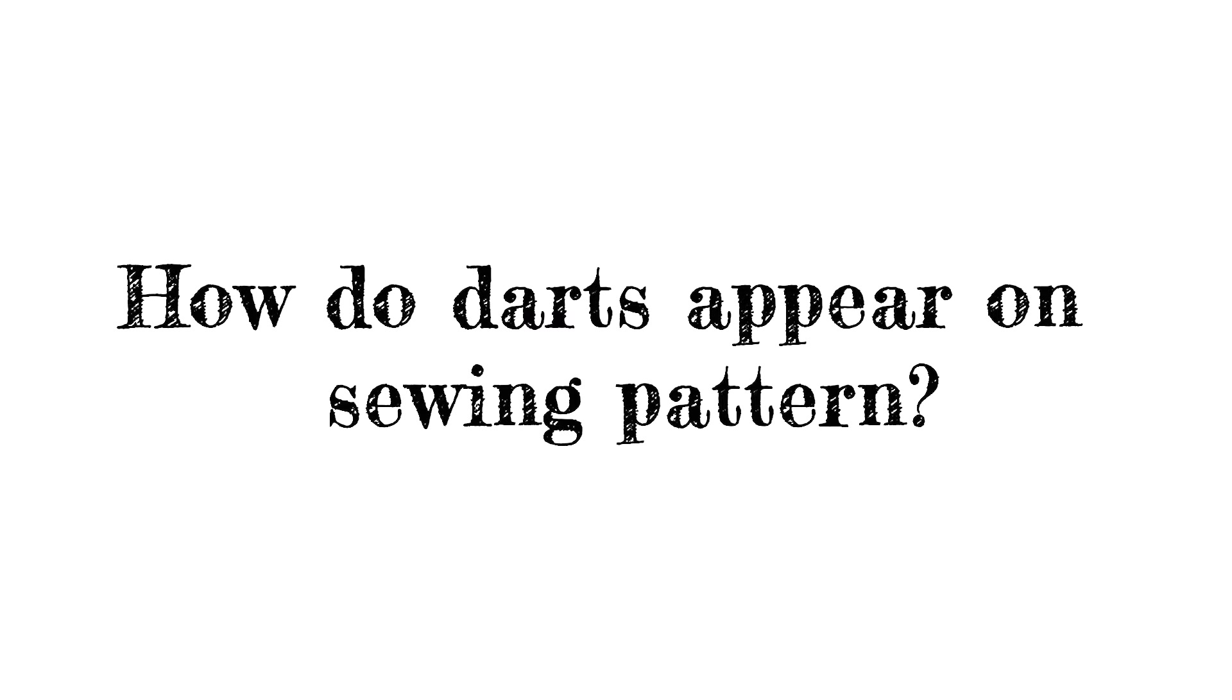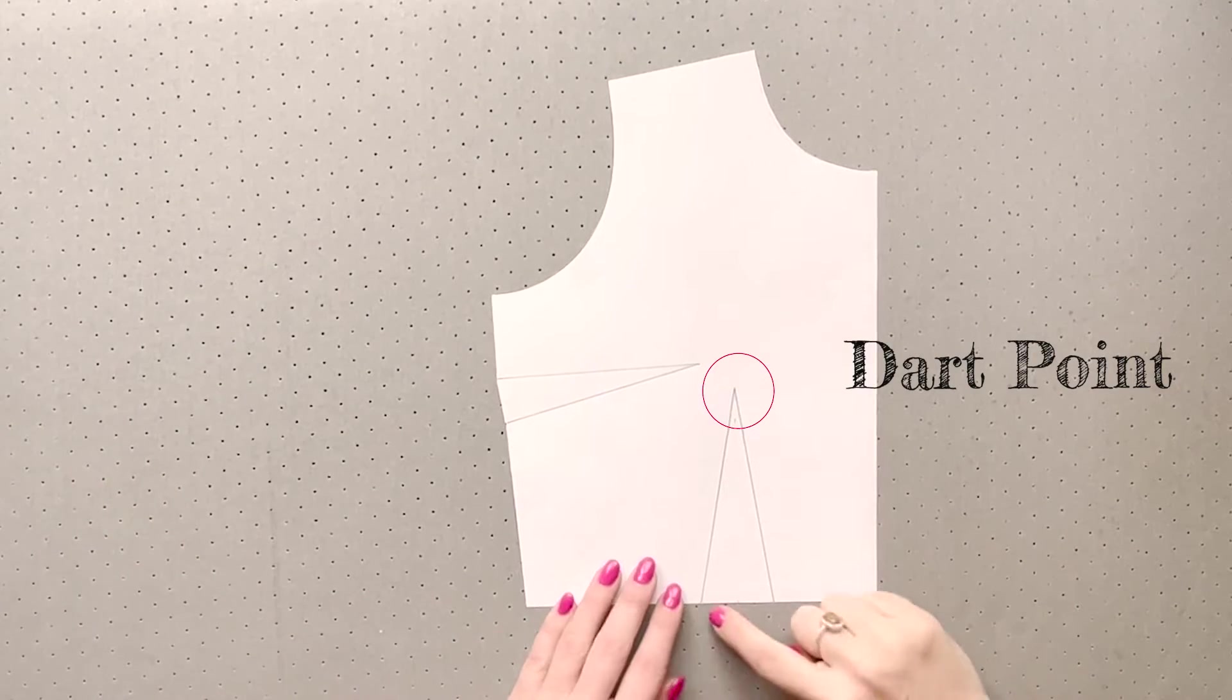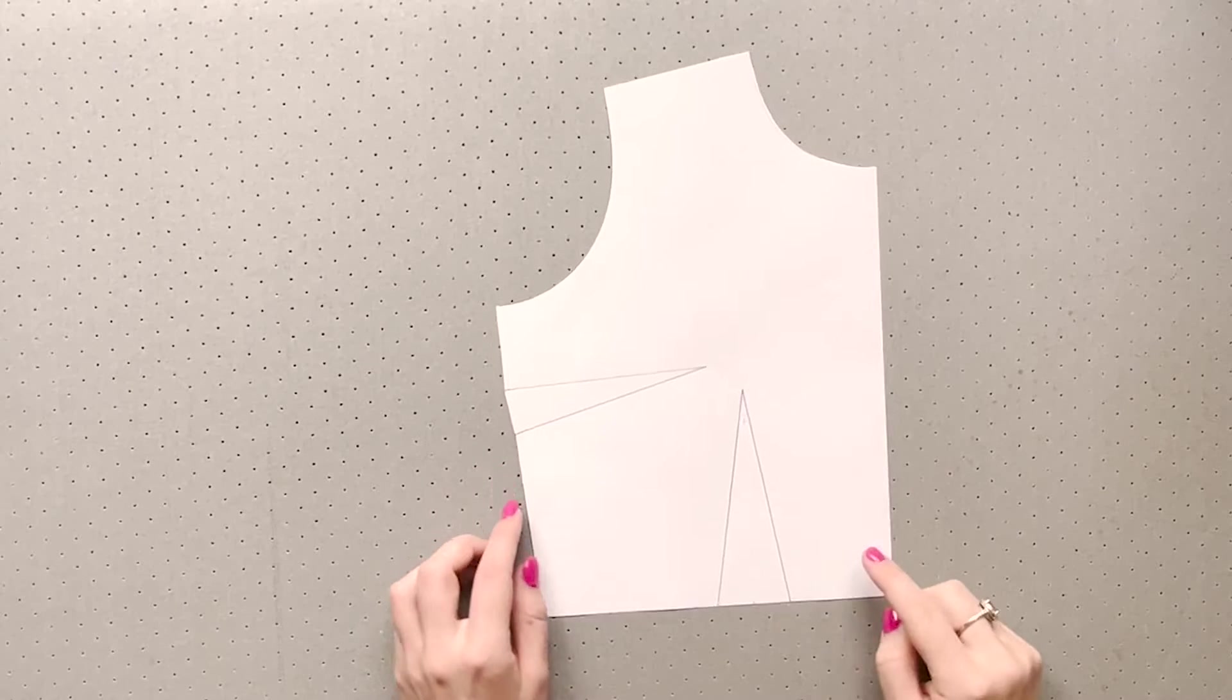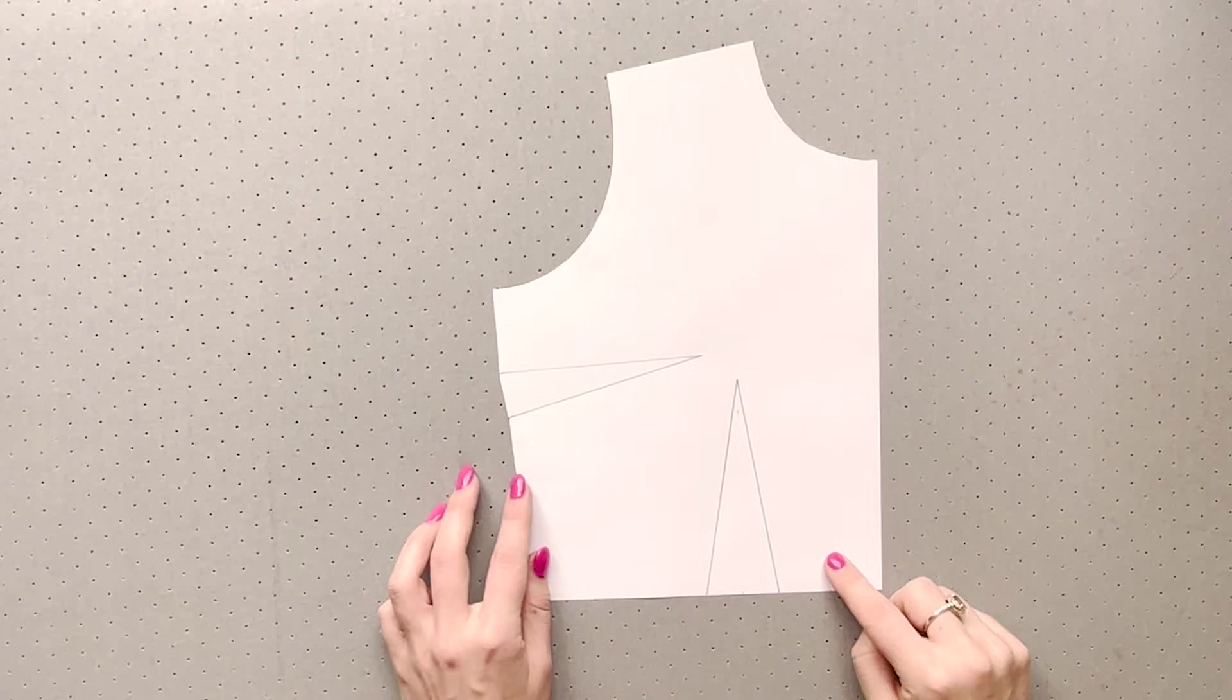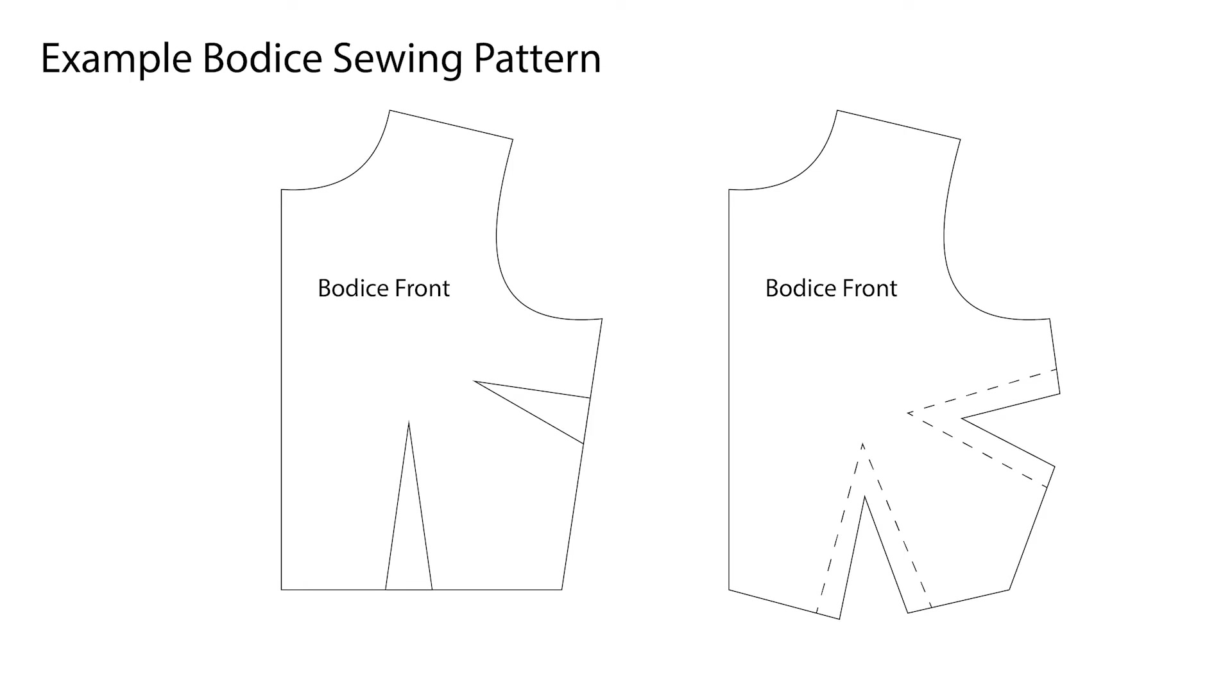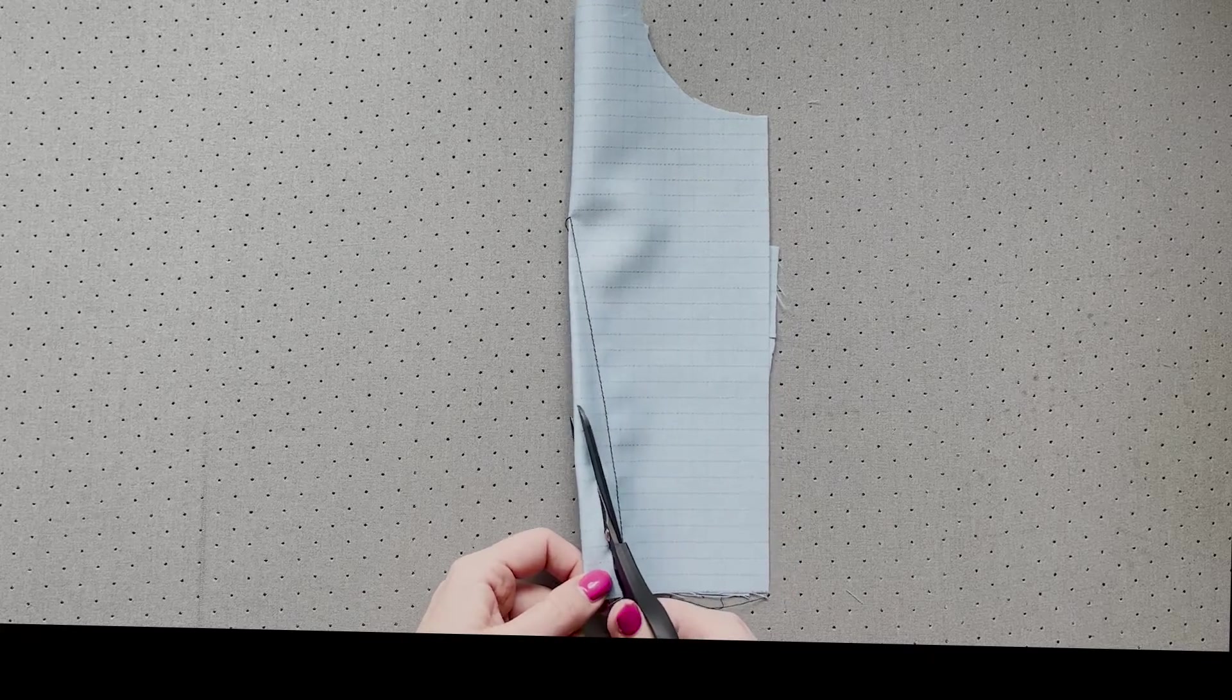A dart will appear like a triangle on a pattern. You have the tip of the triangle here called the dart point and the sides of the triangle are called the dart legs. These legs will go to an edge. Sometimes the internal fabric is removed if it is a particularly wide dart but this is more about creating a neat finish in the end garment and doesn't change what the dart does or how you construct it.